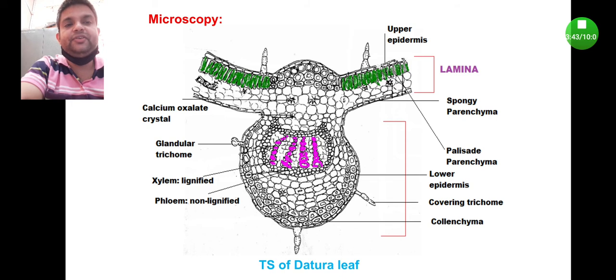Now coming to the midrib part. In the midrib part you will find glandular trichome, then vascular bundle which consists of alternative arrangement of xylem and phloem parenchyma cells. Obviously xylem are lignified.